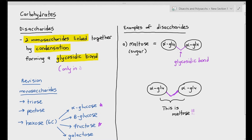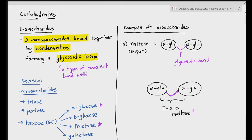An important question students ask is: what is the difference between a covalent bond and a glycosidic bond? A glycosidic bond is a type of covalent bond that is only found in carbohydrates — meaning you will not find glycosidic bonds in proteins, lipids, or nucleic acids. It is very specific to just carbohydrates.